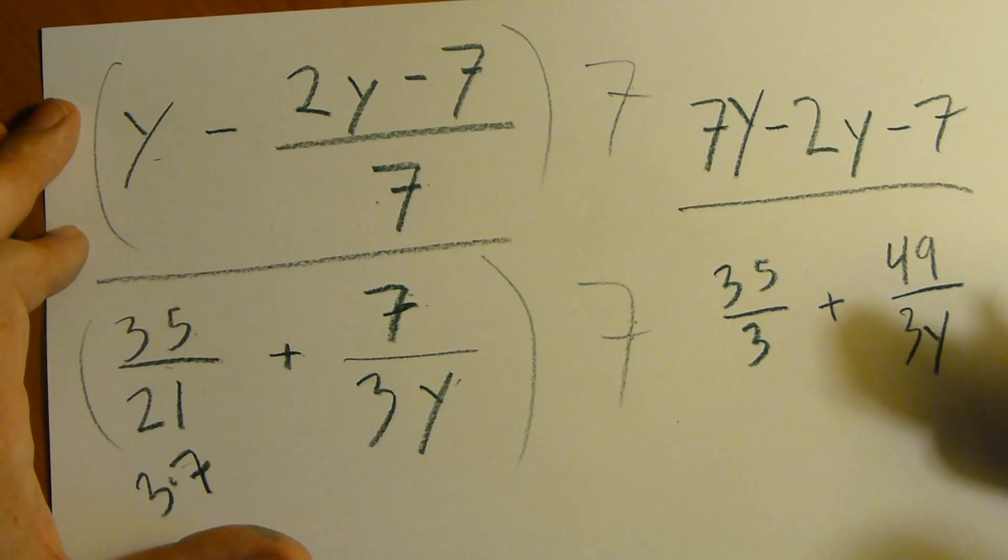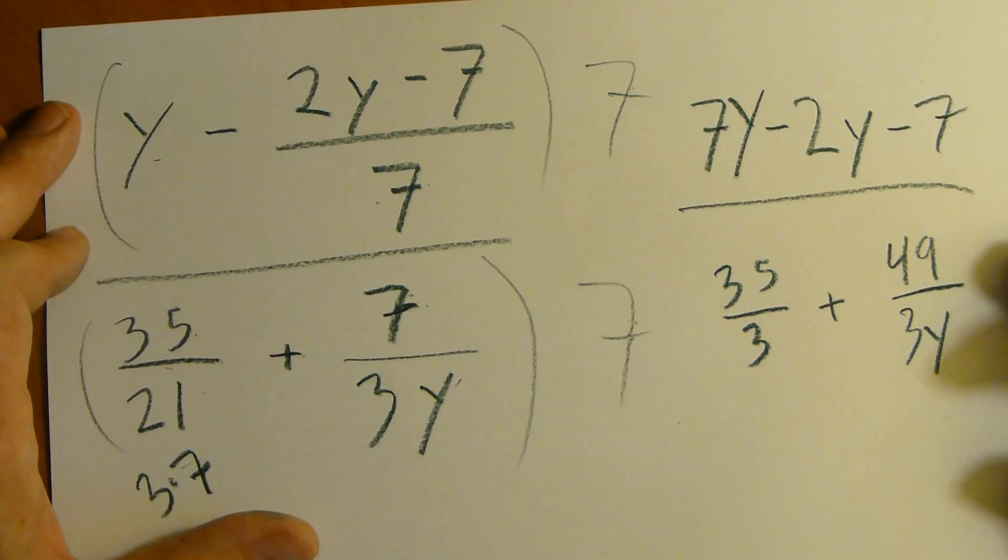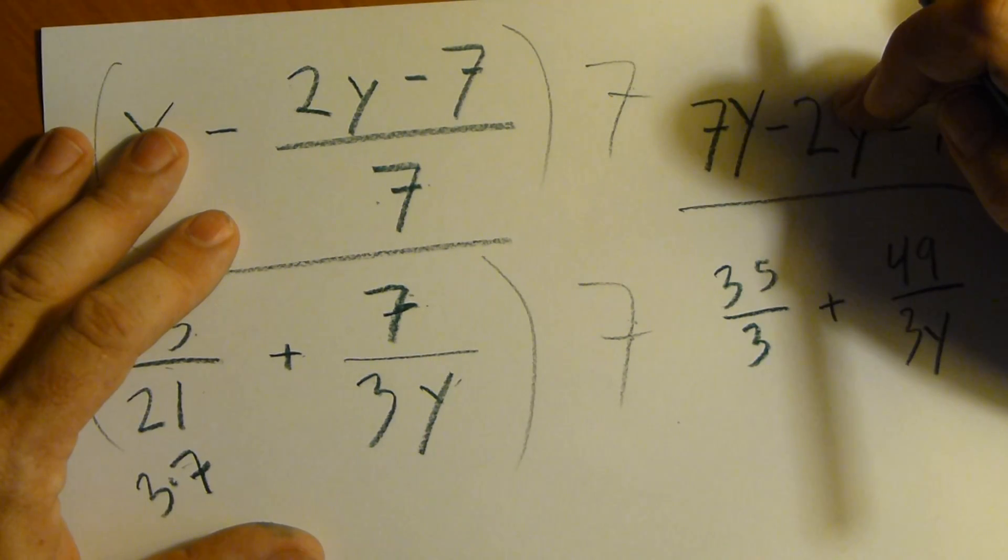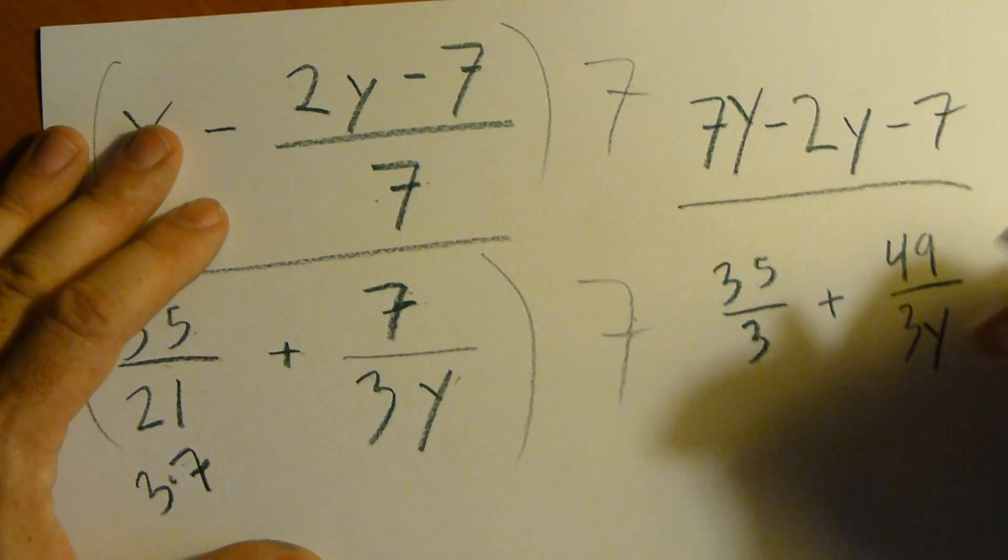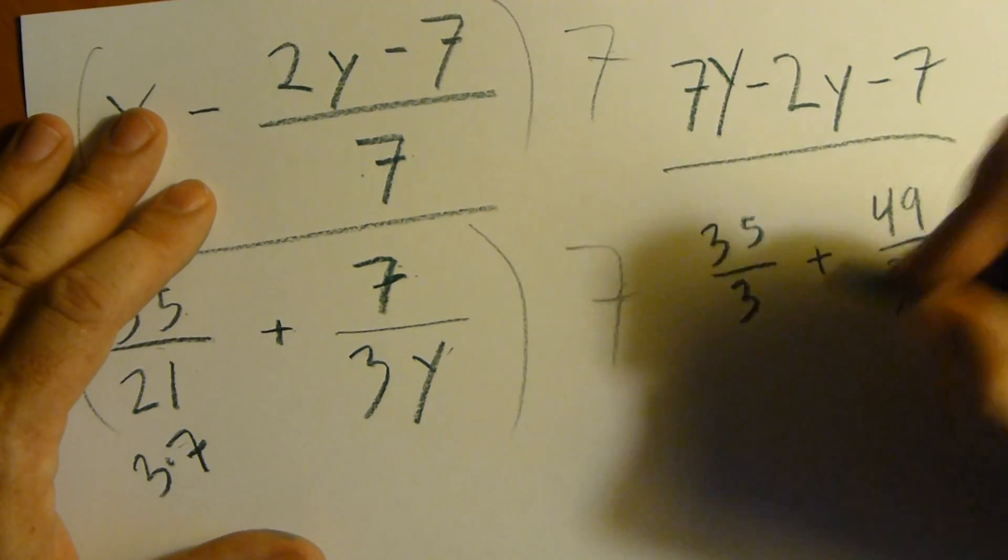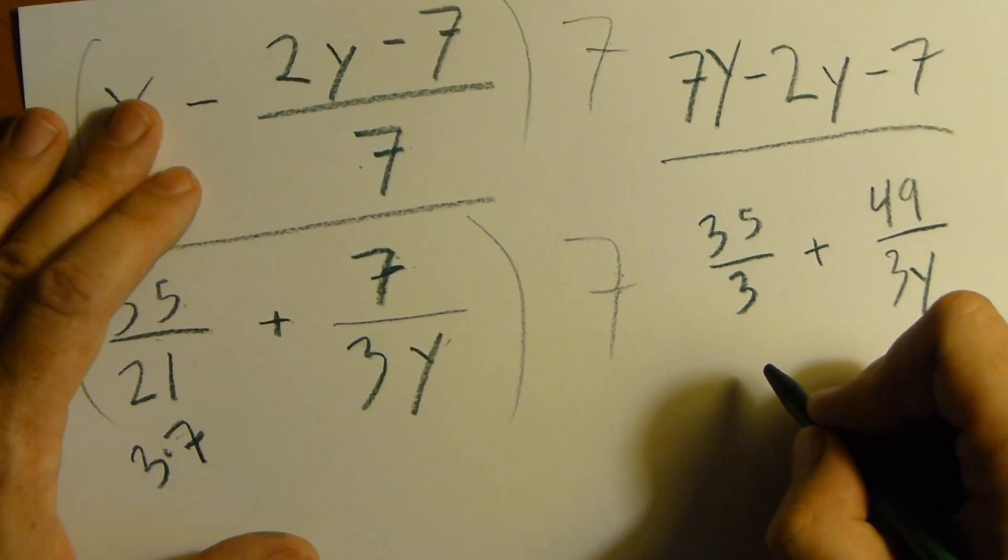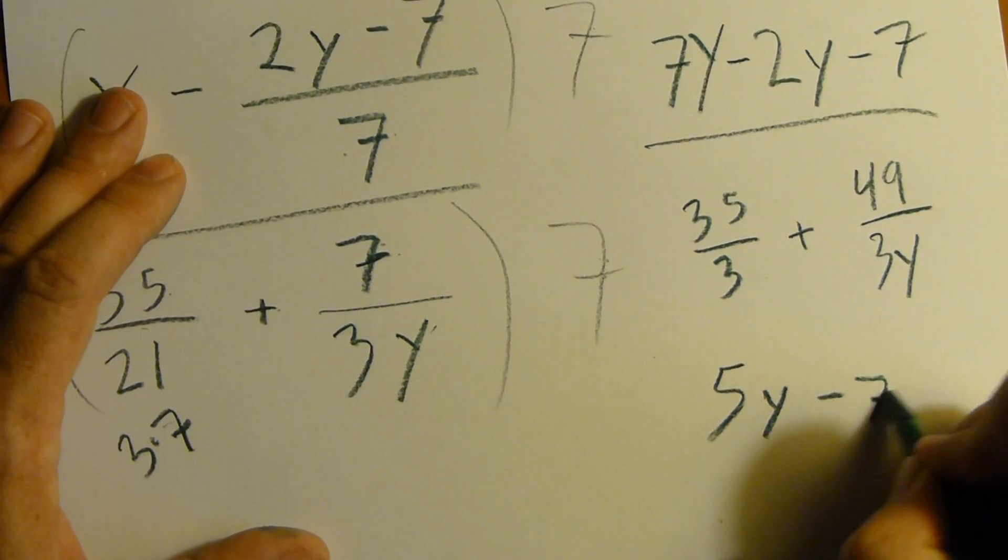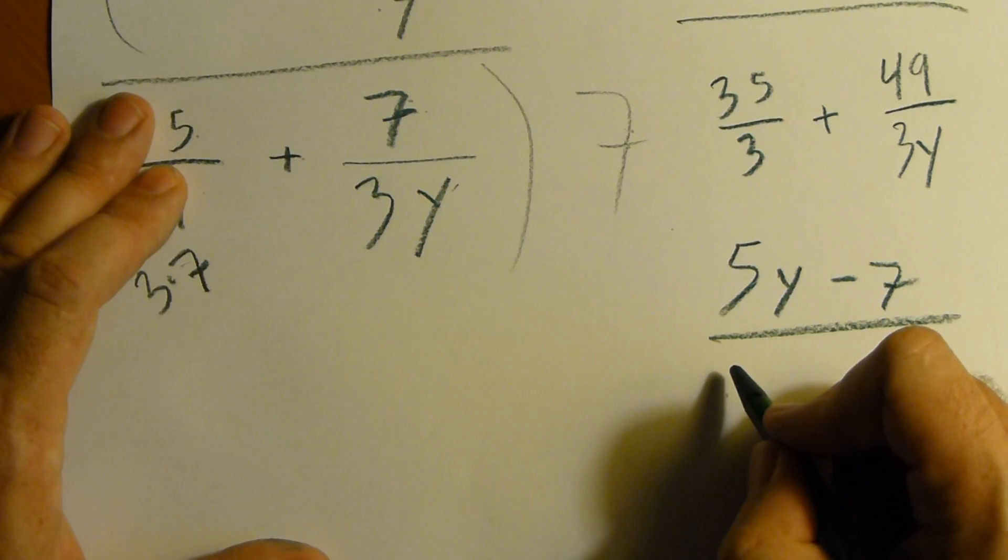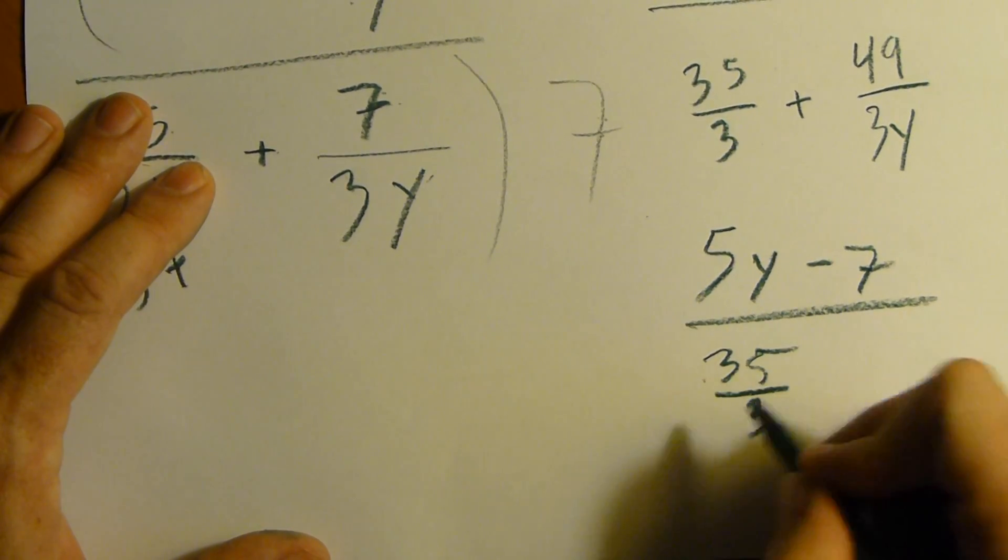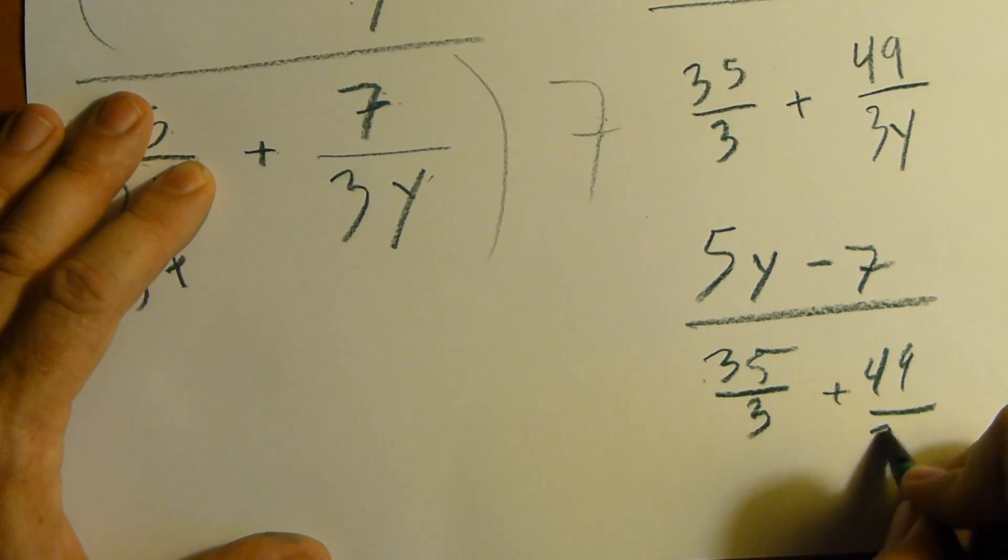Okay, it's more simple than it was. Let's take it a step further. 7y, 2y. We now have, let's rewrite that as 5y. 5y minus 7 over 35 over 3 plus 49 over 3y. We need to simplify it further, though.